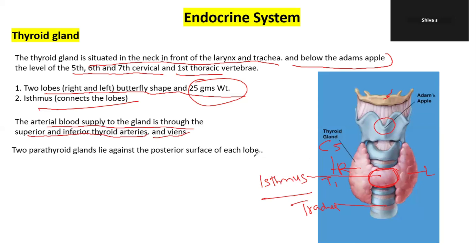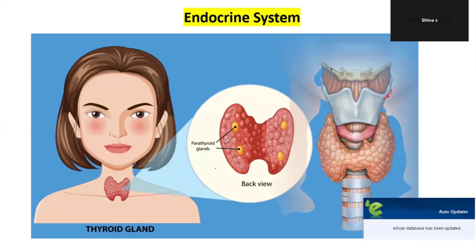On the posterior surface of each lobe of the thyroid gland, we have parathyroid glands. There are two parathyroid glands on each lobe, on the back side, so four in total. You can see their position here in this picture.